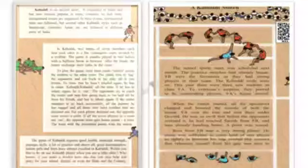In Kabaddi, two teams of seven members each face each other in a flat rectangular court divided by a midline. The game is usually played in two halves with a half-time break in between. After the break, the teams exchange their sides in the court.